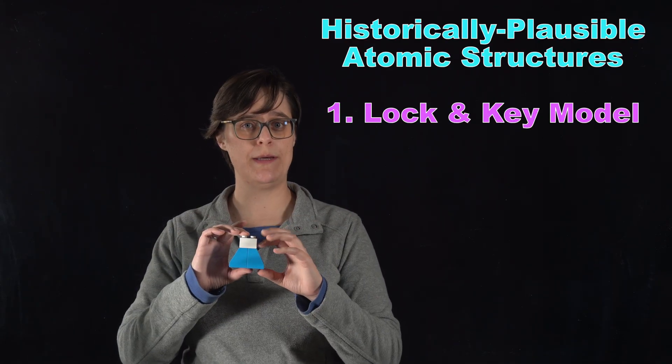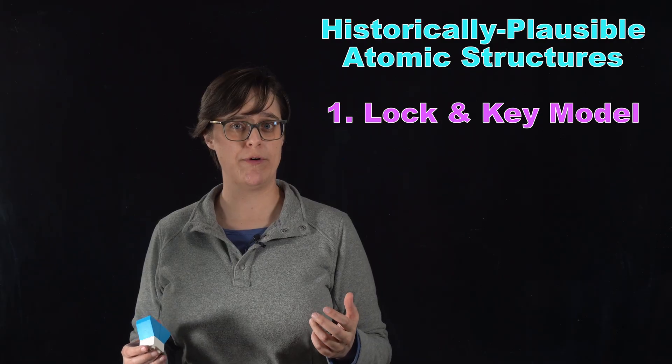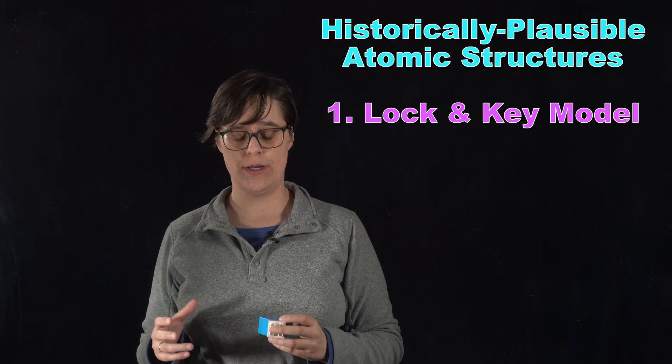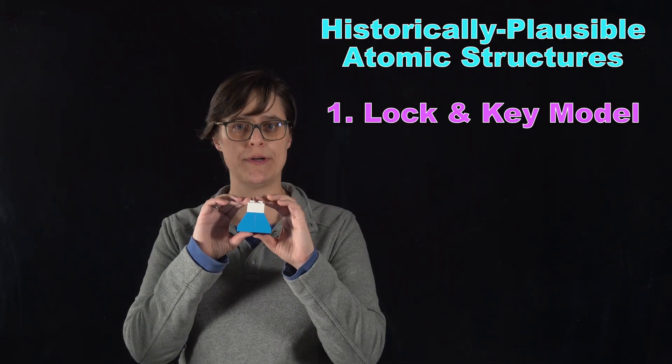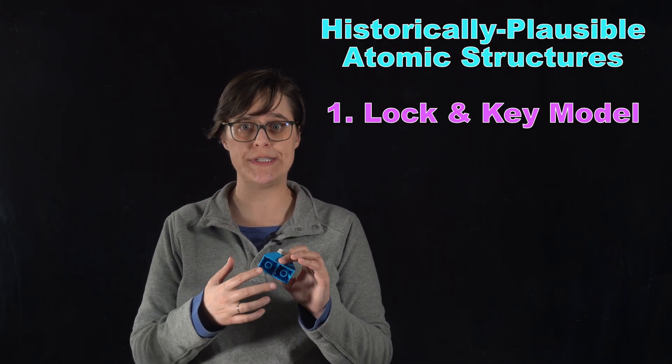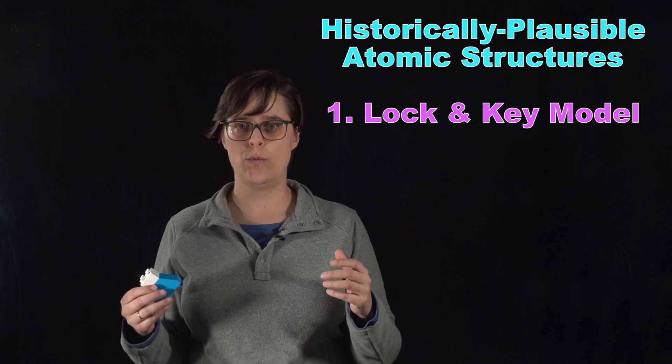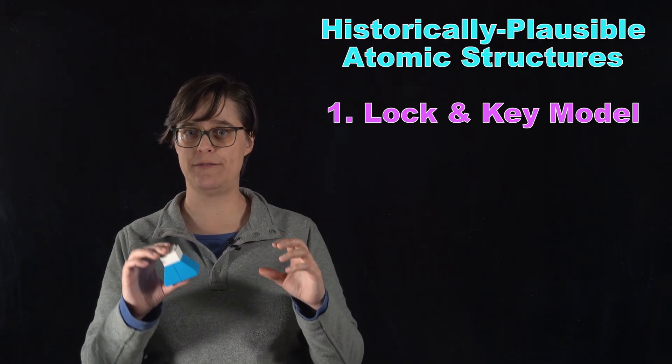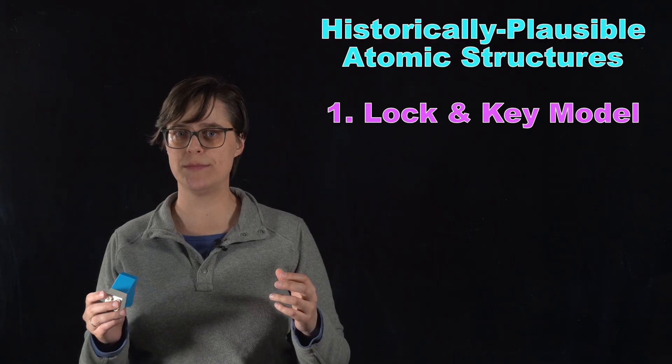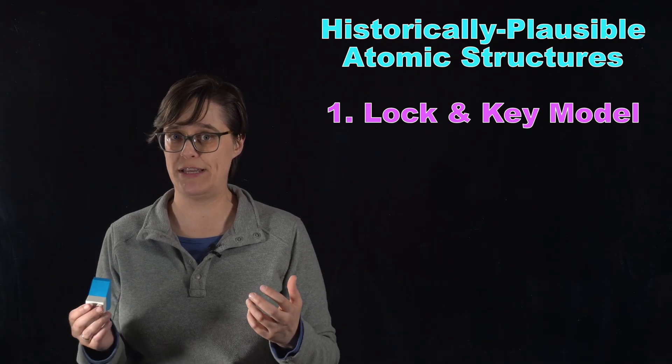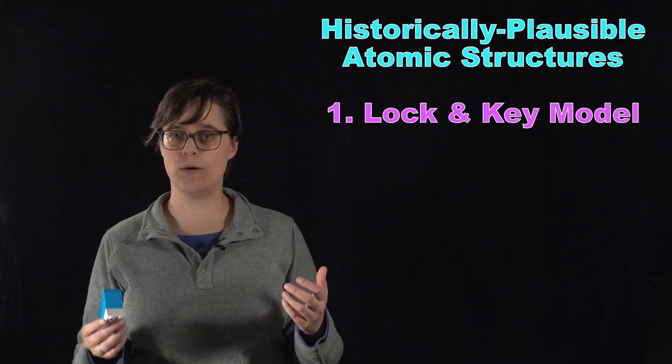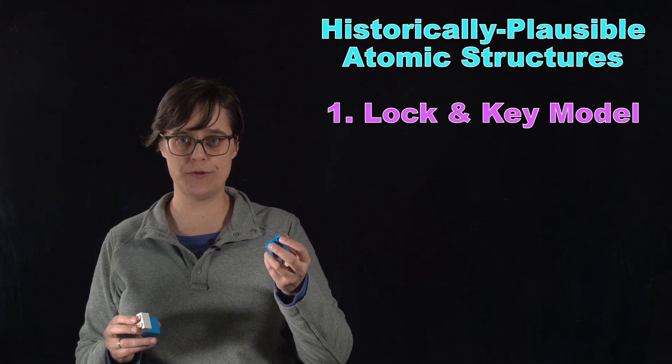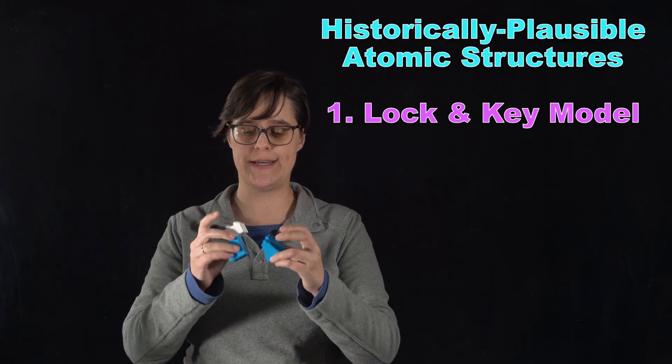First is the lock and key model, inspired by Jeffrey's affinity table from 1718 and early ideas that substances prefer certain reactions. So maybe atoms are like tiny geometric blocks, each with specific protrusions and indentations, like Legos. When they combine, they fit together perfectly, explaining why elements react in fixed ratios. Maybe certain atoms can form stable compounds only because they fit together just right. If water is always the same percentage of hydrogen and oxygen by mass, maybe it's because hydrogen atoms have two little protrusions and oxygen has holes that they can squeeze in.